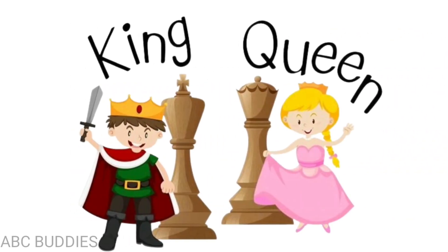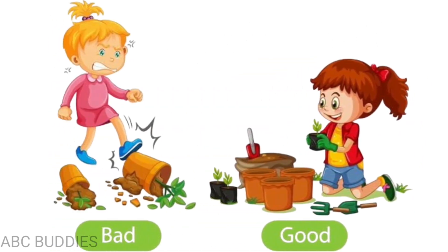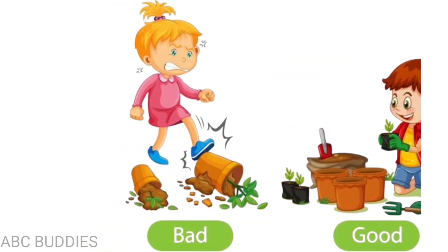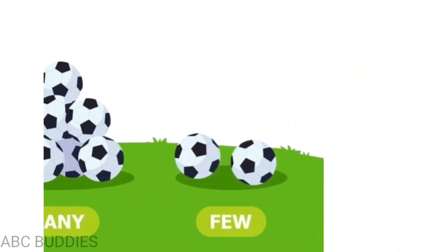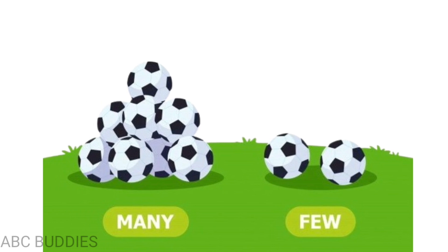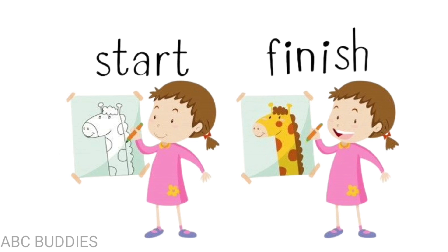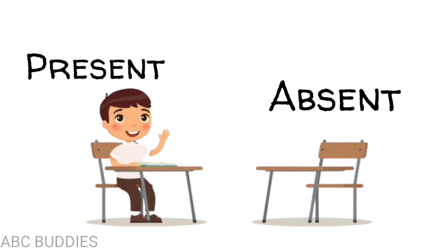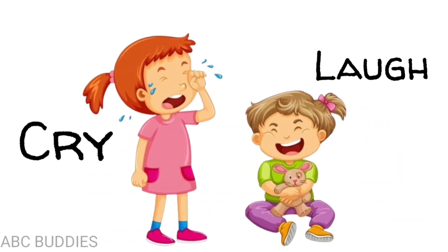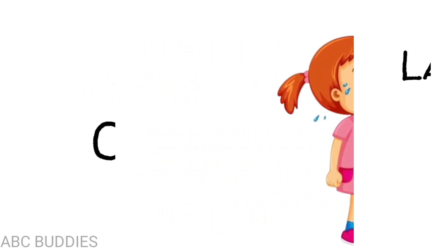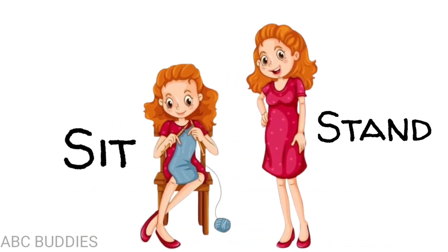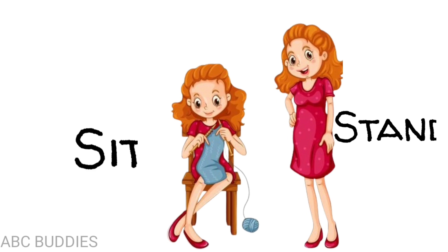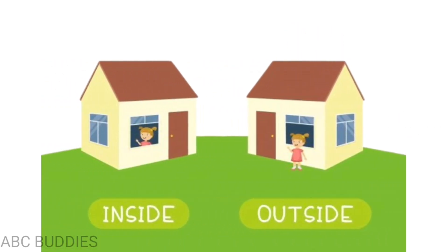King and queen, bad and good, blunt and sharp, many and few, start and finish, present and absent, cry and laugh, smooth and rough, sit and stand, inside and outside.